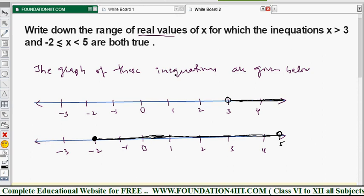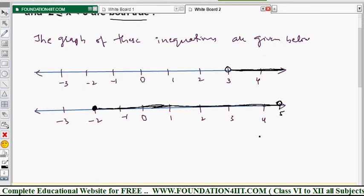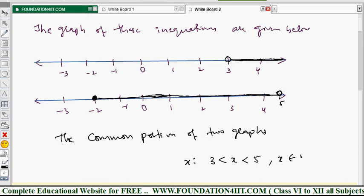Now from this both, here both are true, so we can take the common solution. Common portion of these two graphs is only from here to here. So 3 and this side. From these two lines, just take only the common portion. That is only where both are true. So therefore, the common portion of two graphs is x such that 3 less than x less than 5. 5 is up to 5 itself. Common solution is this, where x belongs to real numbers.